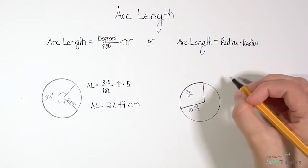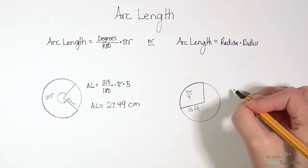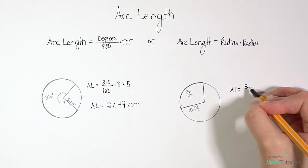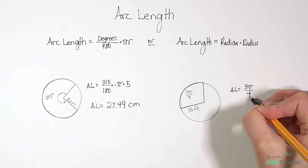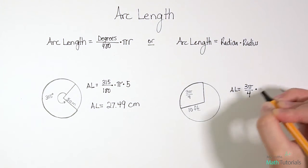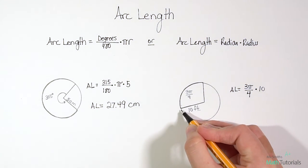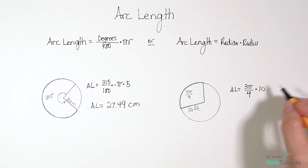To find arc length from here to here we can take arc length equals radian of 3π over 4 times the radius of 10. So again that's the distance from the center of the circle to the edge of the circle. And in this case it's 10.